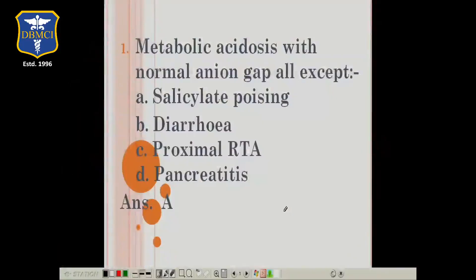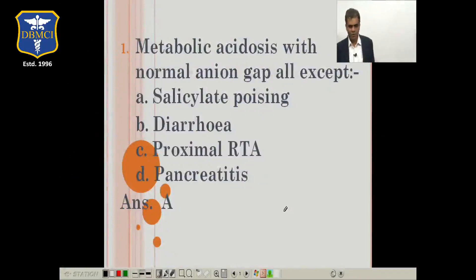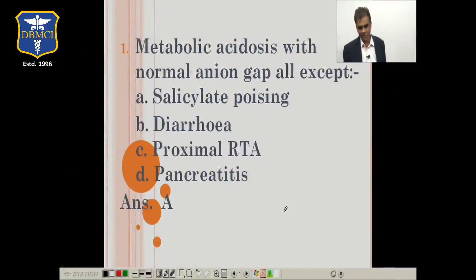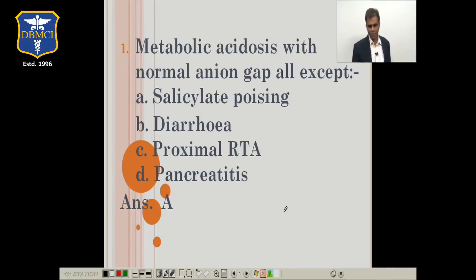Let us straight away start with the first question: metabolic acidosis with normal anion gap is seen in all except — salicylate poisoning, diarrhea, proximal RTA, pancreatitis. The answer is salicylate poisoning.